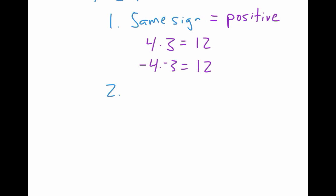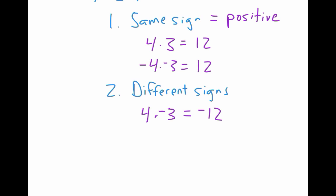The second thing is if you have different signs — one positive and one negative. If you're not sure and you draw a blank on a test, punch in an example: 4 times negative 3 gives you negative 12. Or negative 4 times positive 3 still gives negative 12. Different signs always give a negative answer.